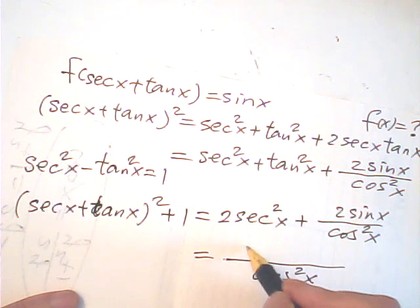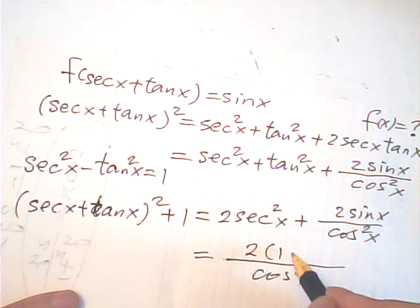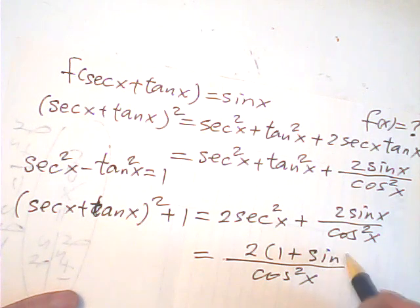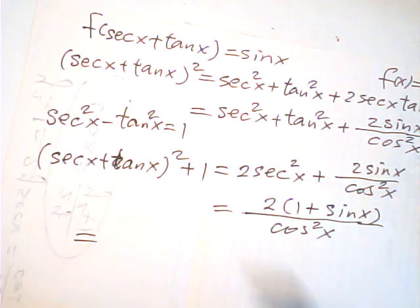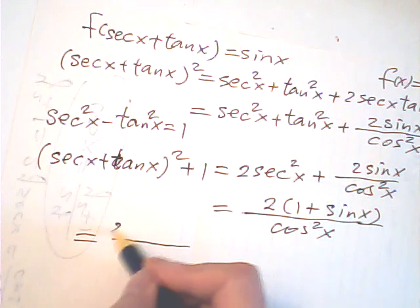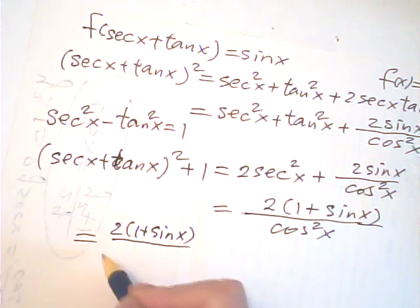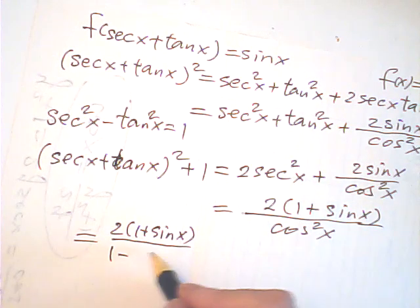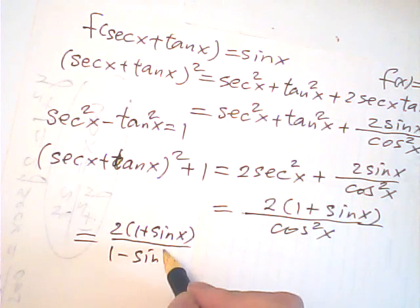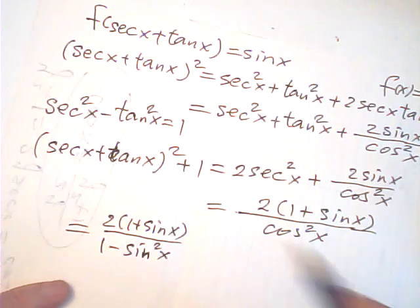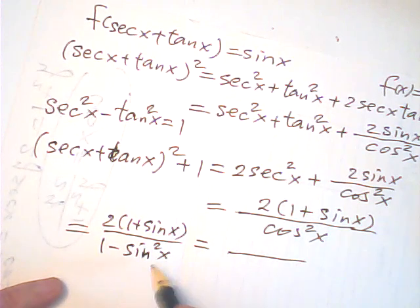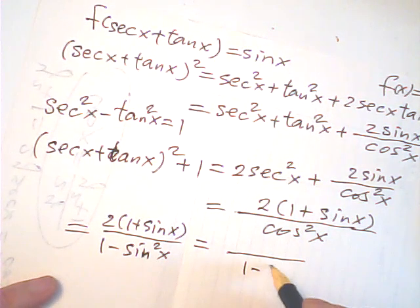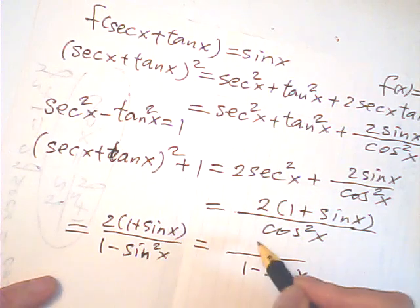So that gives us 2(1 + sin x). And the right side is 2·sec²x, which equals 2 over cos²x, which is 2 over (1 − sin²x). So this is 2 over (1 + sin x)(1 − sin x). Cancelling one factor of (1 + sin x), we get: 1 − sin x = 2 over [(sec x + tan x)² + 1].